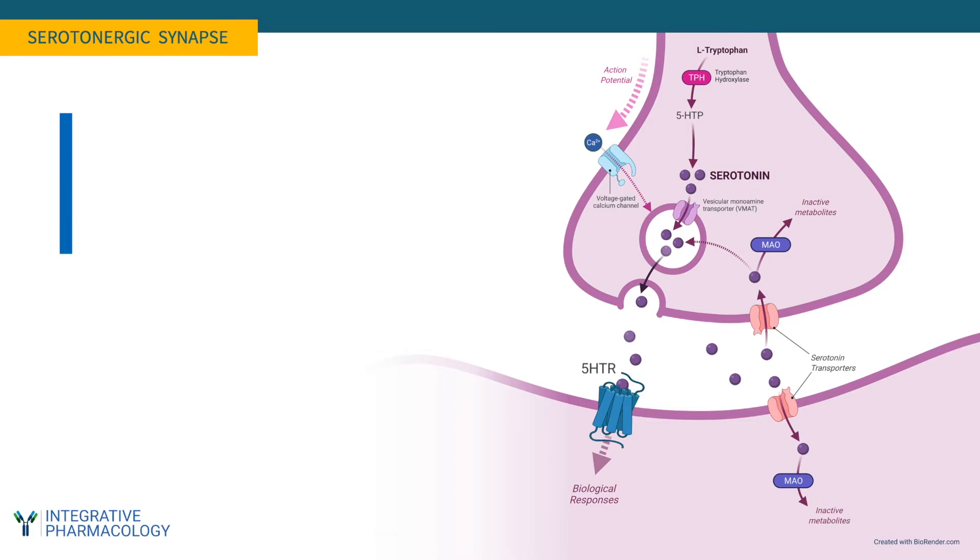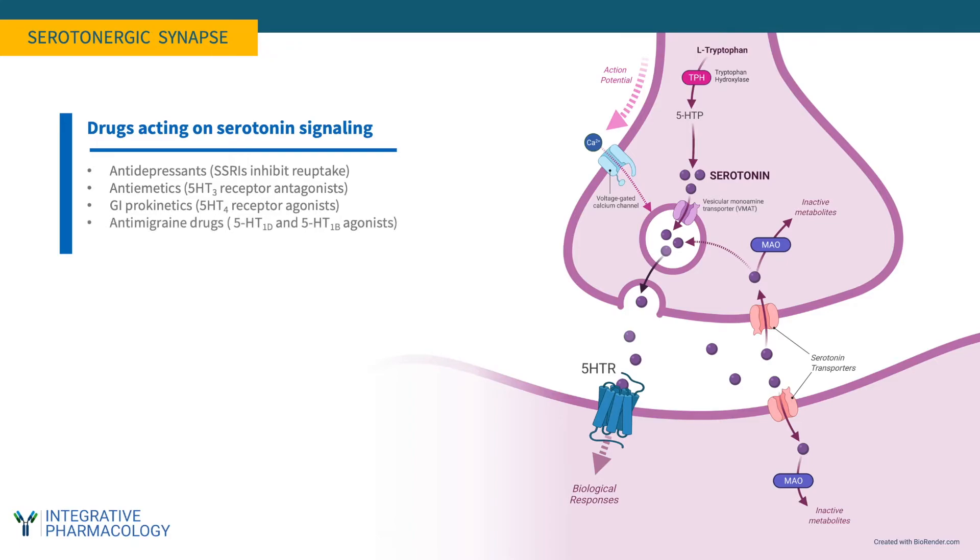Drugs that affect serotonin signaling include antidepressants, antiemetics, and prokinetics used in gastrointestinal settings. Anti-migraine drugs work on certain types of 5-HT receptors, and certain hallucinogens. Recreational drugs such as LSD affect serotonergic pathways in the brain.